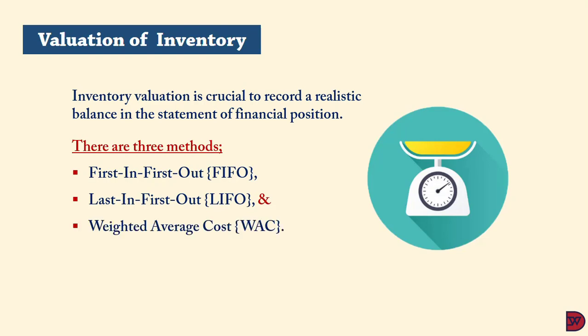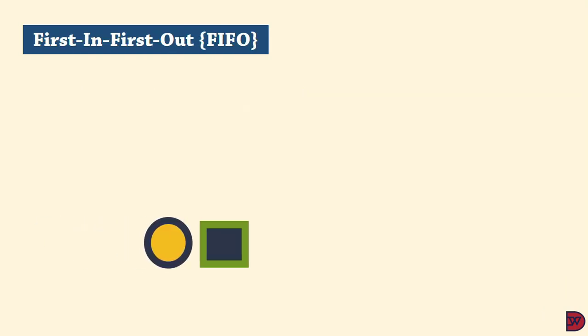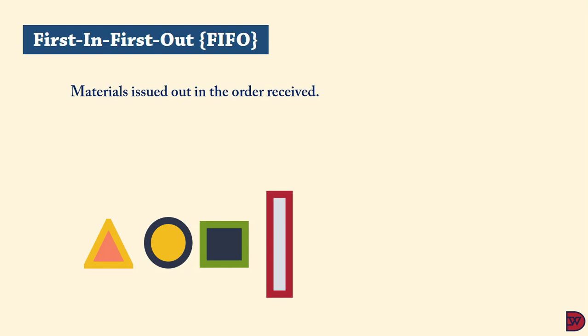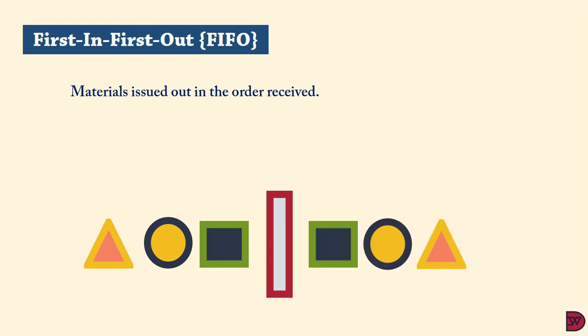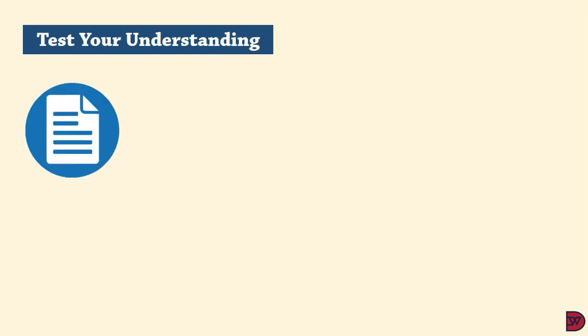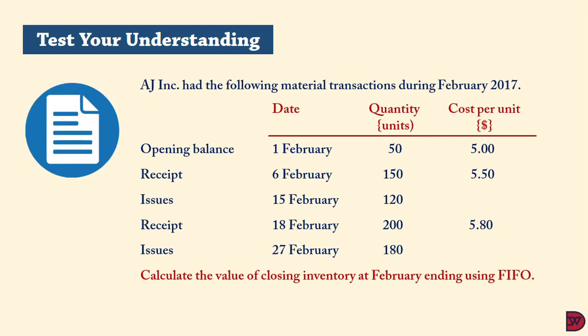With the First In First Out (FIFO) method, management assume that inventory is used or issued in the order it was secured or manufactured. So the first inventory bought is the first sold, and as a result the closing inventory will consist of the most recent receipts of inventories, valued at their cost.